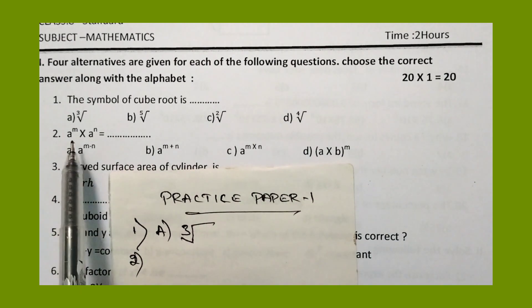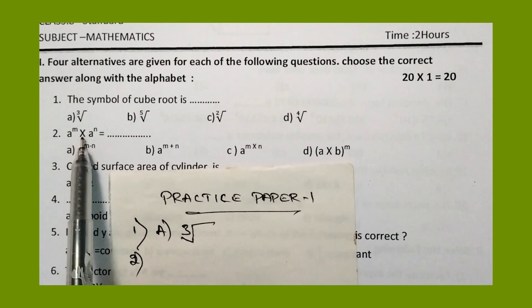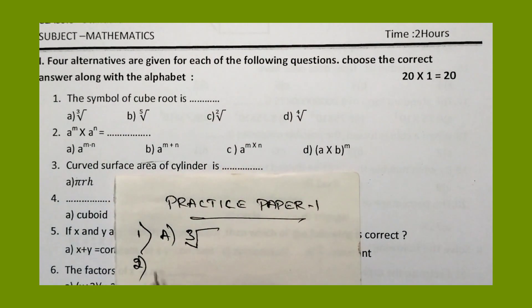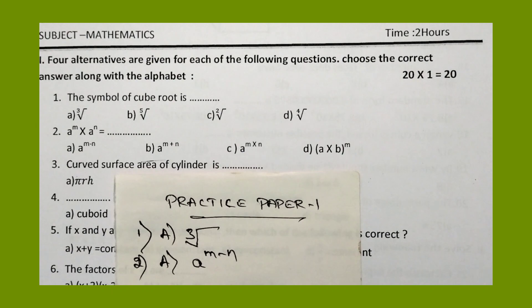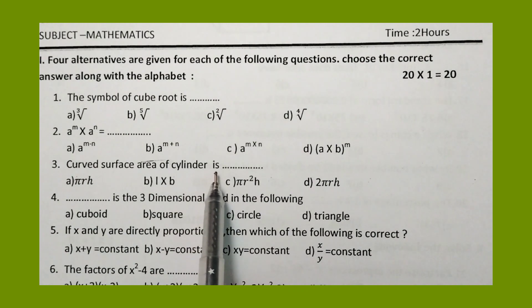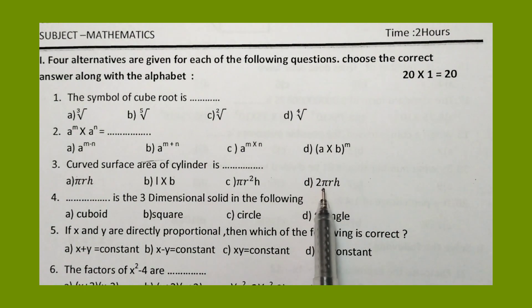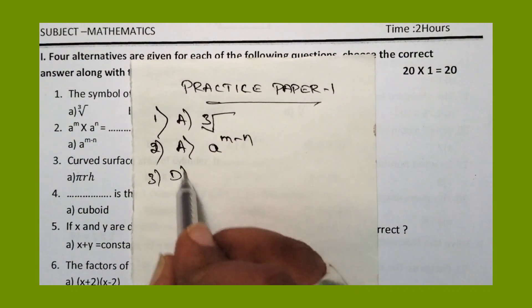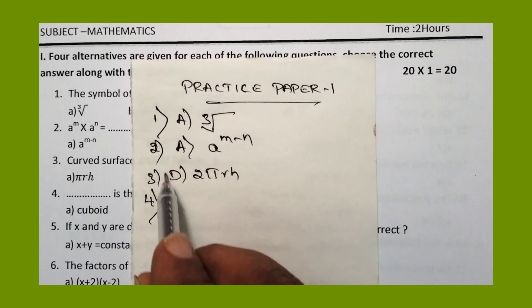Coming to the second question: A to the power of M into A to the power of N equals A to the power of N — option A is the answer. Then coming to the third question: curved surface area of the cylinder. The right option is option D, 2πrh. This is the formula to find the CSA of a cylinder.